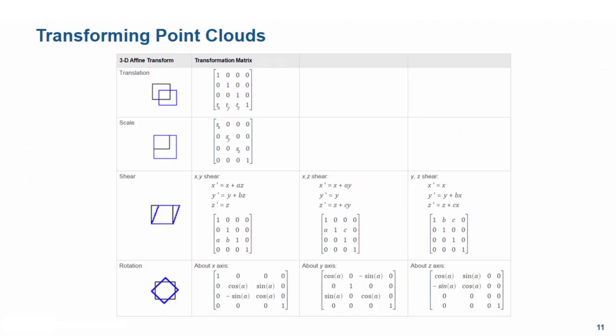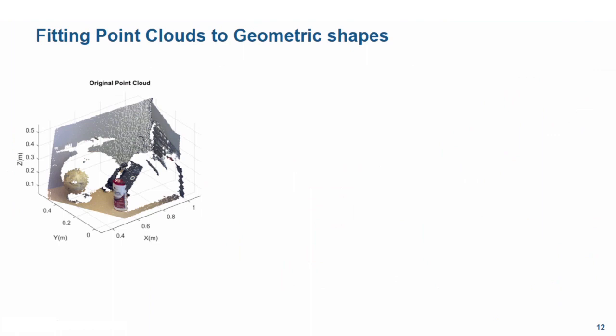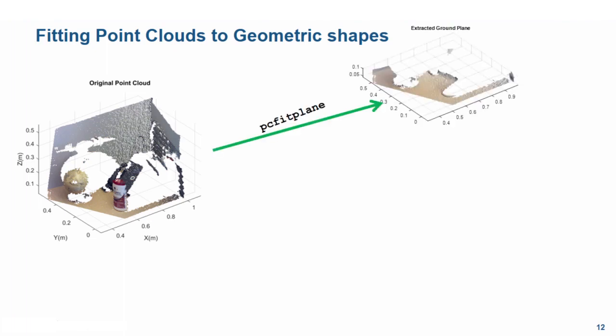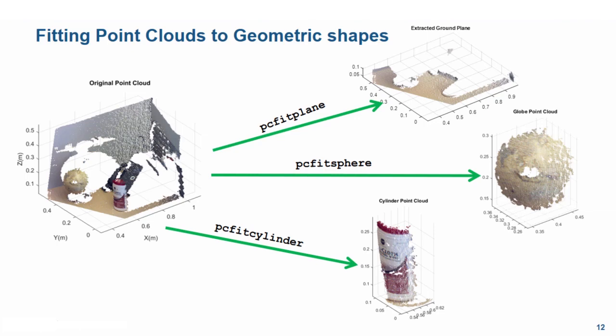Let's go back to the presentation to discuss how to fit 3D point clouds into geometric shapes. In MATLAB, given a 3D point cloud, we can use various forms of pcfit to fit point clouds into different geometric shapes. For example, we can use pcfitplane to extract the ground plane from the original point cloud. Or we can use pcfitsphere or pcfitcylinder to extract spherical or cylindrical objects. This is useful if we want to extract specific items from the scene — such as detecting targets or localization markers — or to keep one background plane and remove all other items, for example finding a large ground plane for an autonomous aircraft to land.